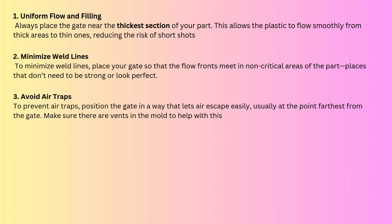The next key factor is to avoid air traps. Air can get trapped in the cavity if flow is uneven or non-uniform. To prevent this, position the gate so that air can easily escape. Provide vents in the mold at the farthest point from the gate, so air can easily escape from the cavity.